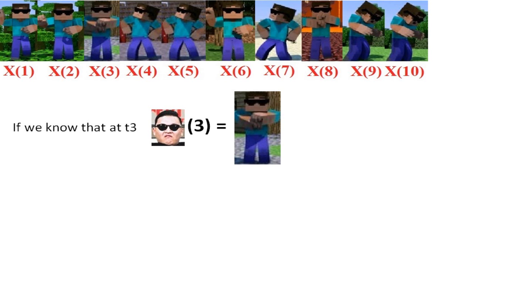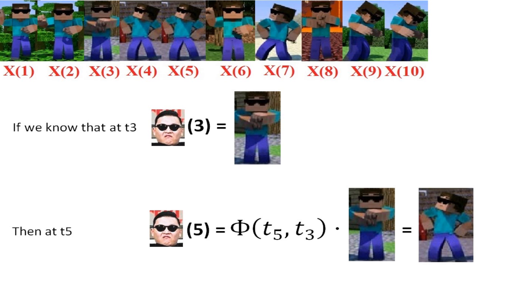If we know that the state of psi at T3 is equal to this, then we can compute that the state of psi at T5 is equal to phi T5 T3 times the state of psi at T3, which is equal to this. So now, do you understand what a state transition matrix is?